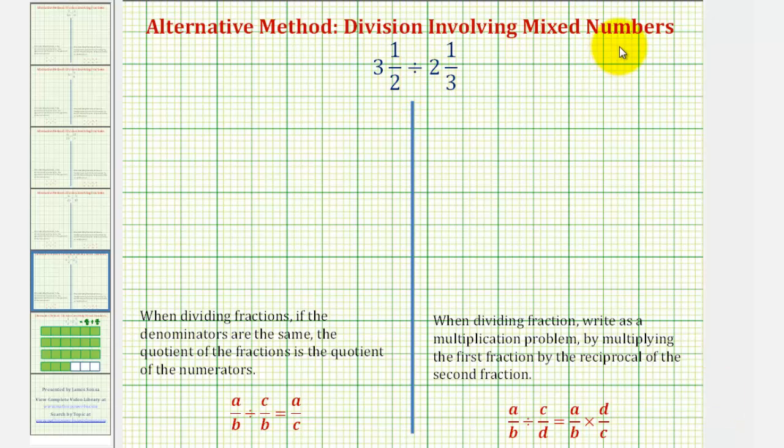Welcome to a division problem involving mixed numbers. Here we have three and one-half divided by two and one-third. Our goal here is to determine how many two and one-thirds there are in three and a half. To do this, we'll first find the quotient using an alternative method where if we have the fractions with a common denominator, we can find the quotient by determining the quotient of the numerators.